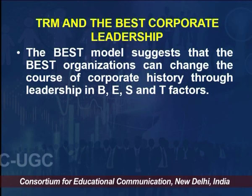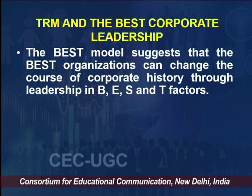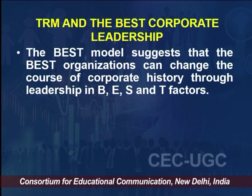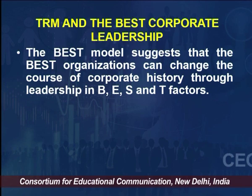The BEST model basically suggests that the best organizations can change the course of corporate history by offering leadership in terms of all four factors — B, E, S, and T. If you offer the best leadership across these factors of production, your leadership will be regarded as the best. TRM is the approach to achieve this; it takes us towards the strategic gearing of organizations. The BEST model describes four routes to corporate leadership and corporate excellence.